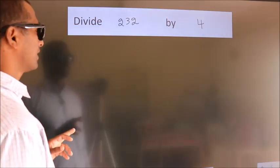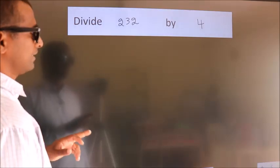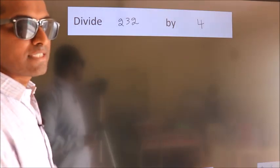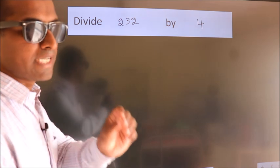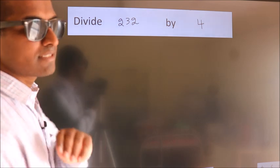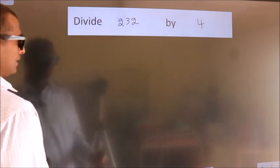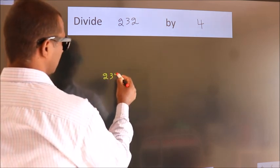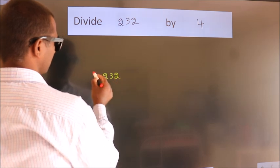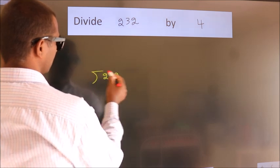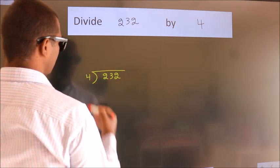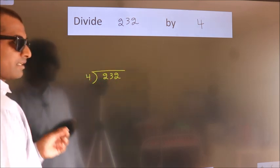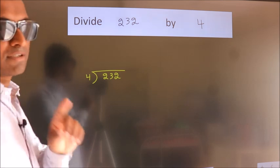Divide 232 by 4. To do this division, we should frame it in this way: 232 here, 4 here. This is your step 1.